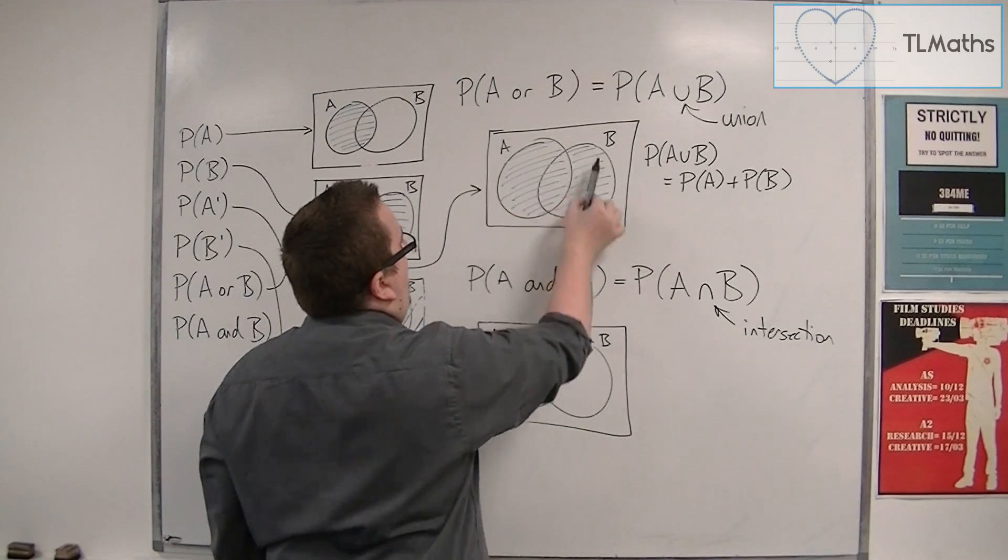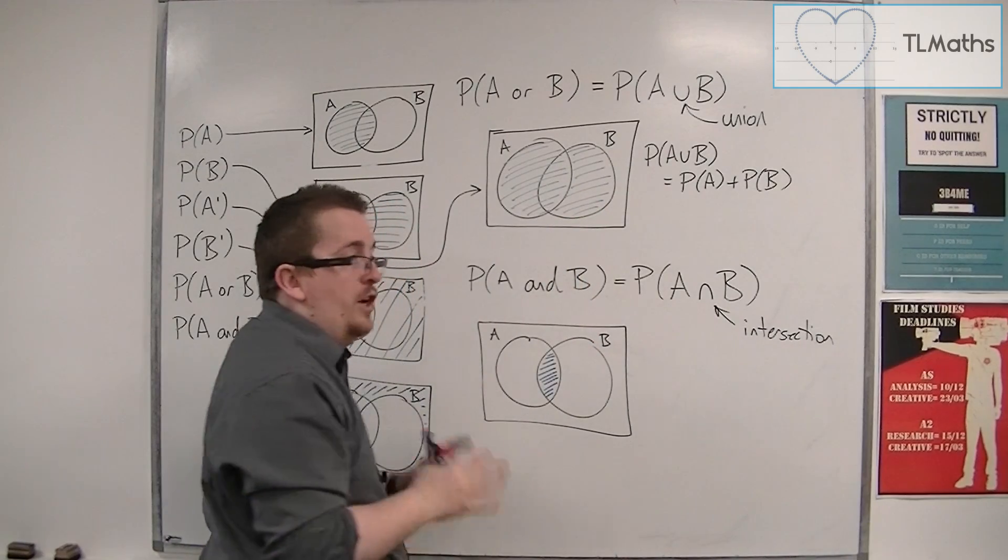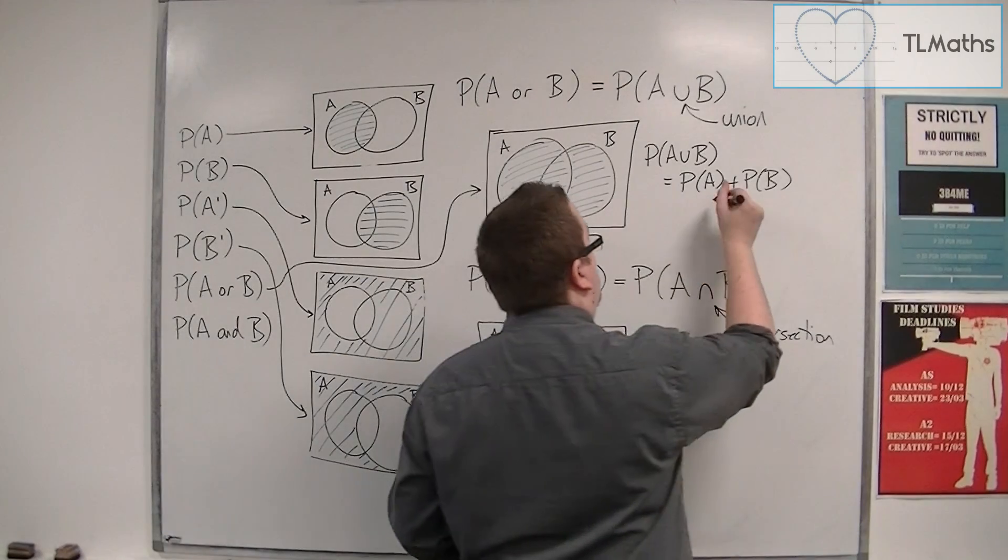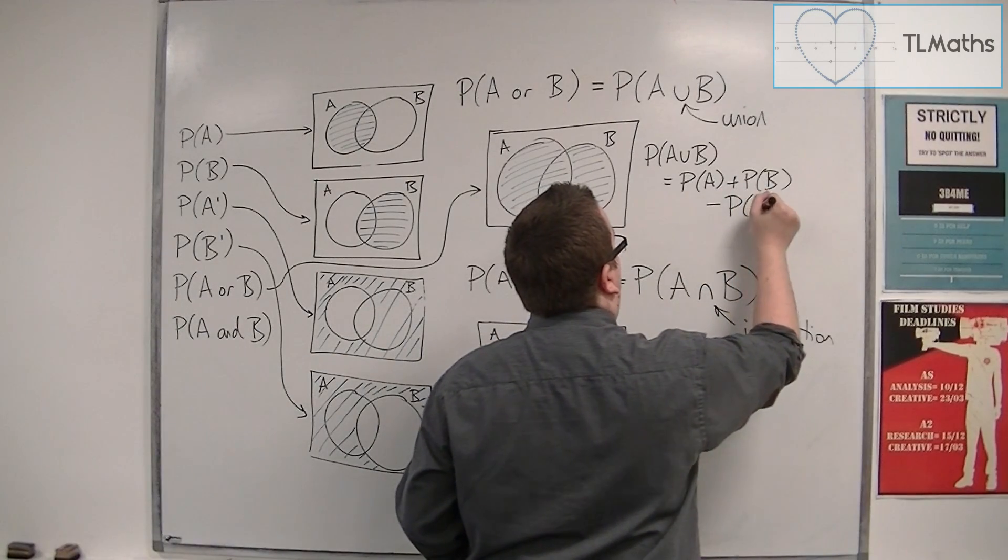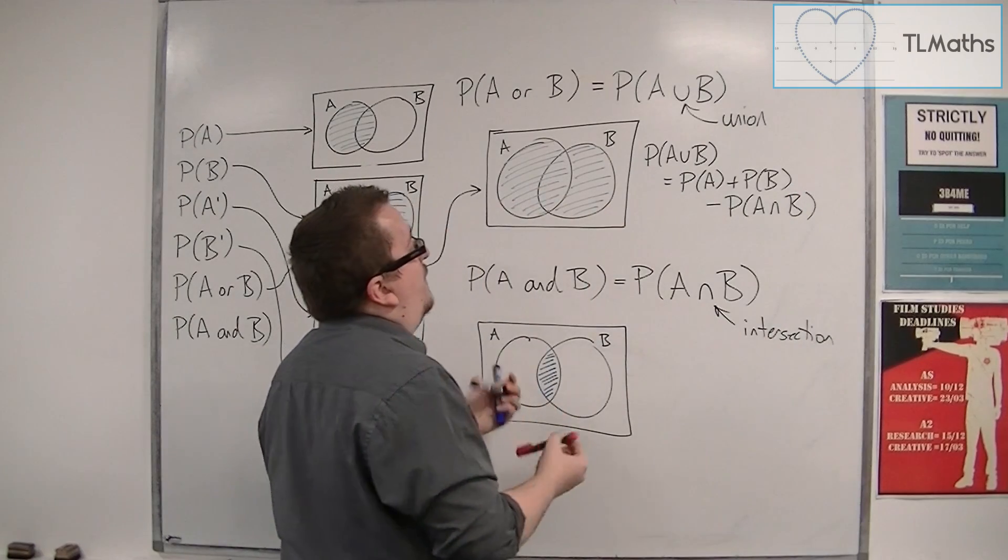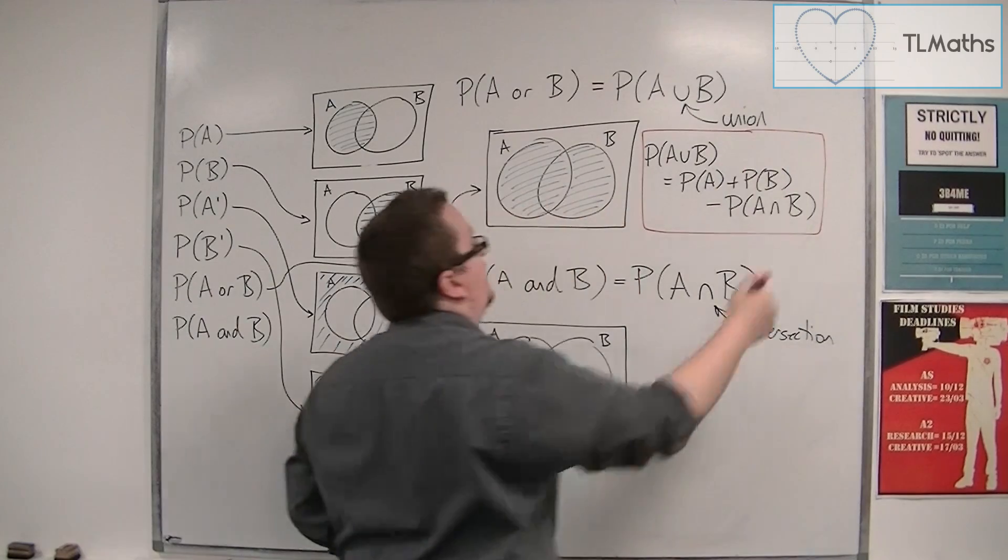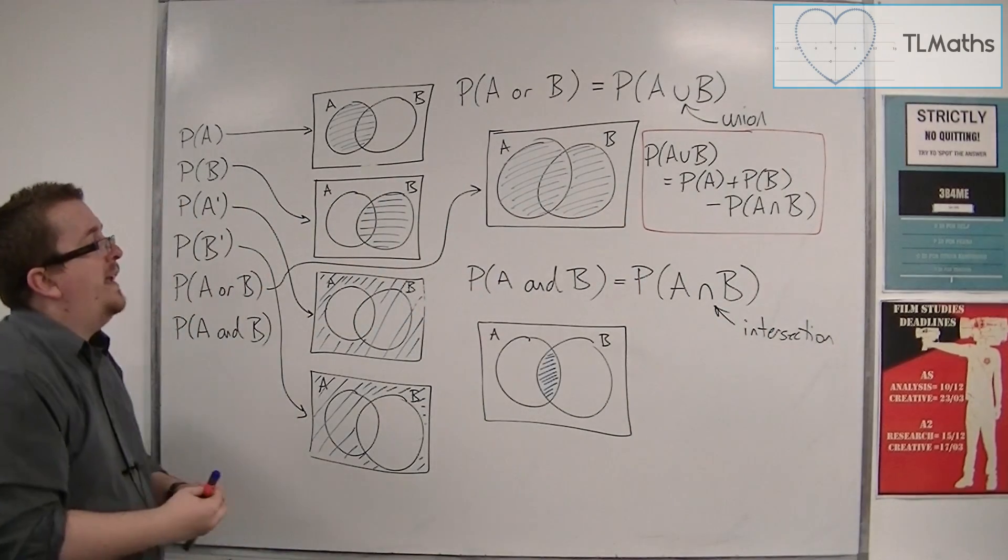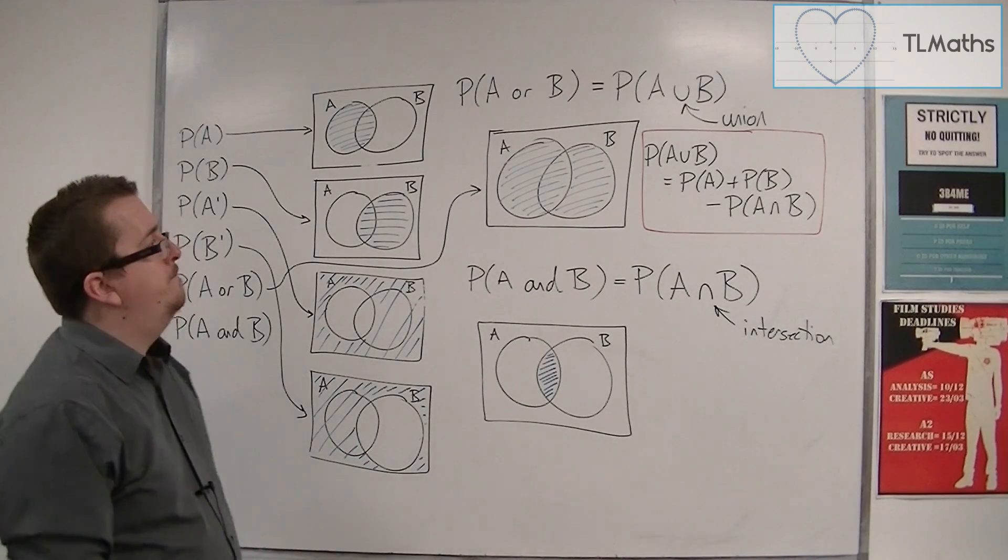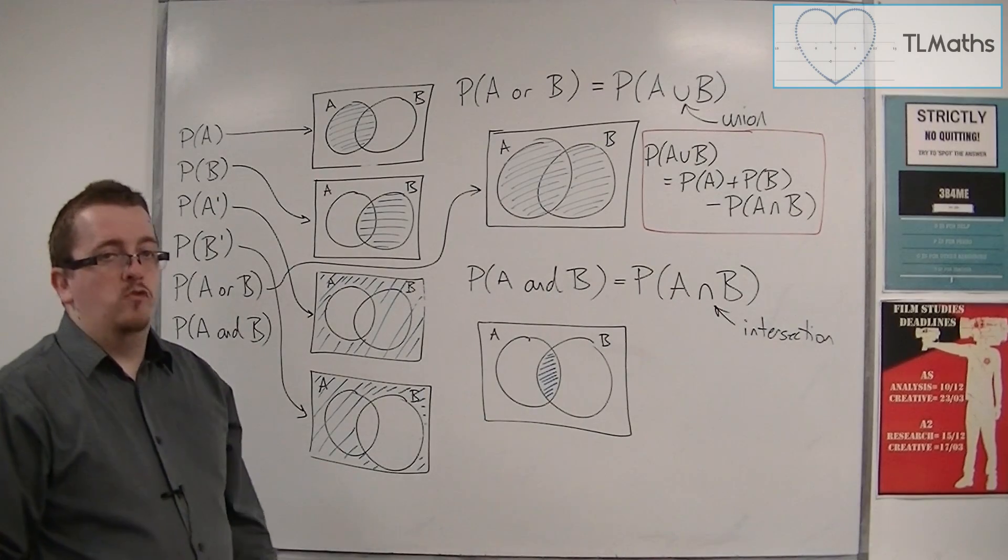Because we've got all of A and all of B, but we've got two lots of that intersection, and I don't want two lots of the intersection. I only want one lot. So I've got to subtract one amount of the intersection. So the probability of A union B can be written as the probability of A plus the probability of B take away the probability of the intersection of A and B. And that is one of the formulas that we really need to remember.